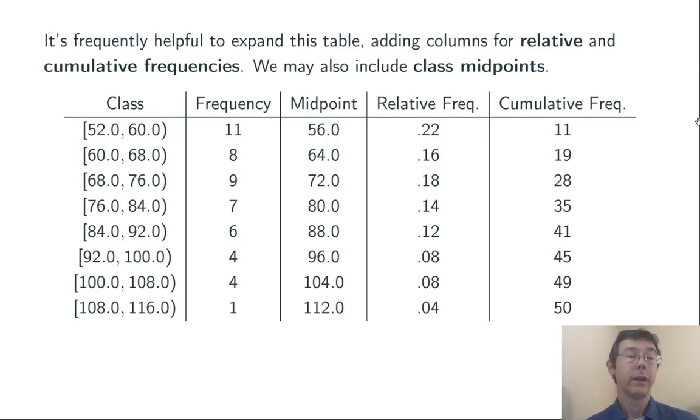So, here, dividing by 50. 11 divided by 50 is 0.22. 8 divided by 50 is 0.16, and so on. This gives you a feel for the frequency that isn't dependent on the size of the dataset.